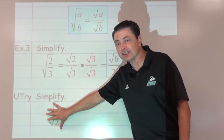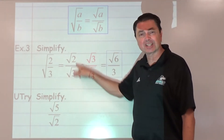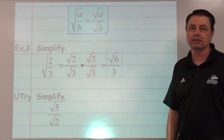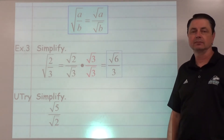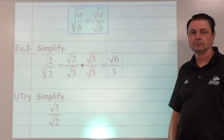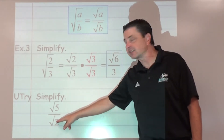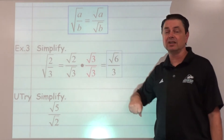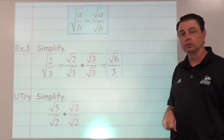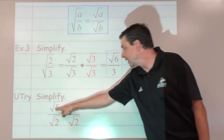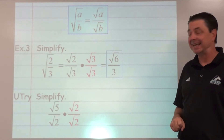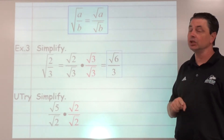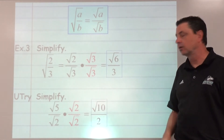Go ahead and try this one — it's already broken up for you, ready to fix. Pause until you're ready. We need to fix our denominator, which is the square root of 2. We're going to multiply numerator and denominator by the square root of 2. Square root of 5 times square root of 2 is the square root of 10. Square root of 2 times square root of 2 is 2. And that's as far as we can go.